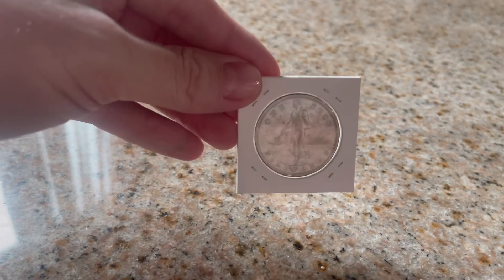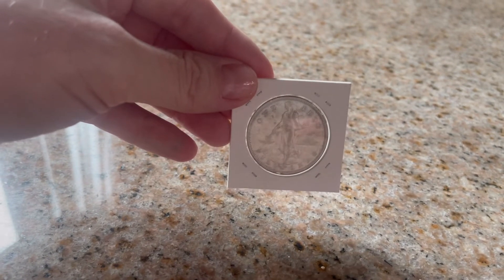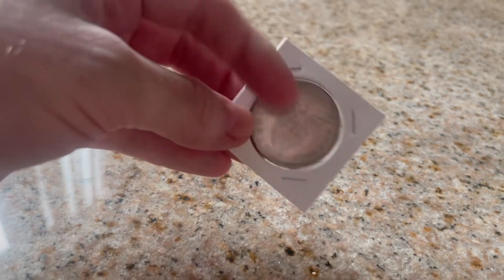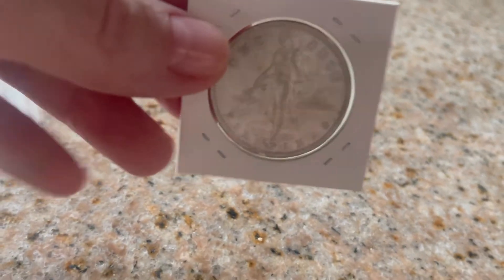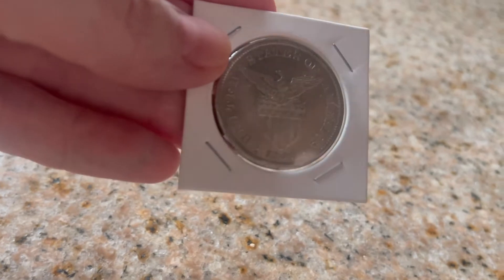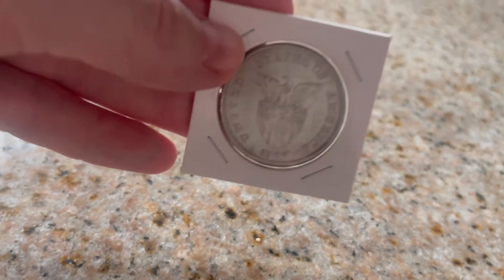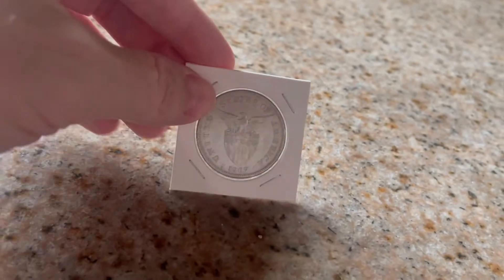From the Philippines, one peso coin from what year is it? It's 1907. So this is from 1907.